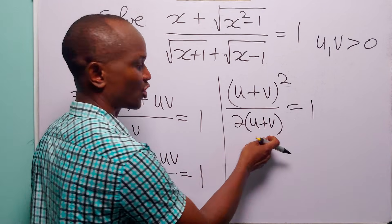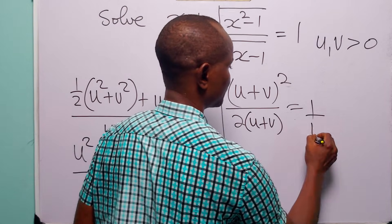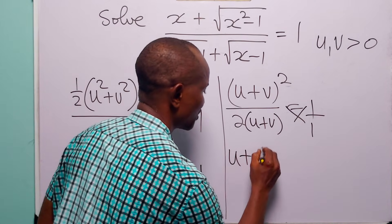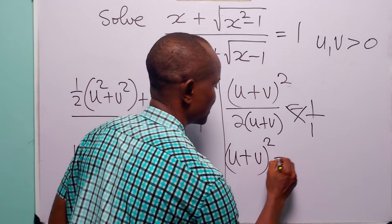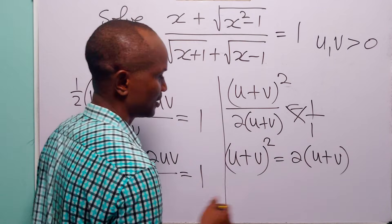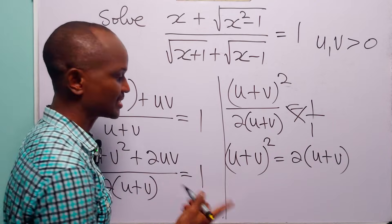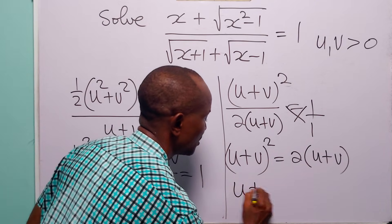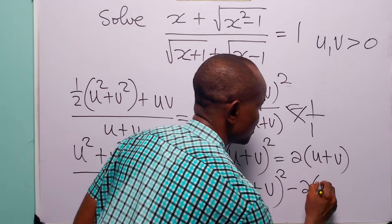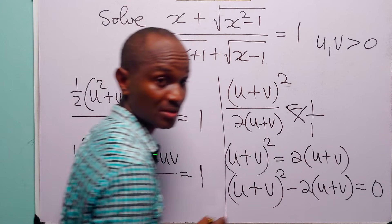To get rid of this fraction on the left-hand side, we cross-multiply. When we do that, we have that (u plus v) squared is equal to 2(u plus v). Bringing this term to the left-hand side, we have (u plus v) squared minus 2(u plus v) is equal to 0.